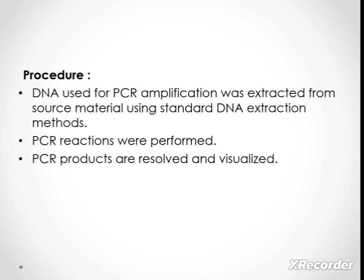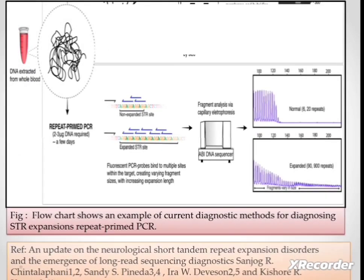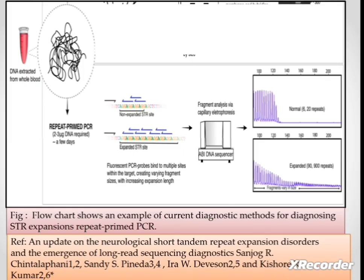Now, what is the procedure which was used? First, the DNA was extracted from the source material using standard DNA extraction methods. Then PCR was performed, and the PCR product was then resolved and visualized. This is the schematic representation of the whole experiment, from DNA extraction to how primers bind to DNA, then fragment analysis by capillary electrophoresis to the electropherogram, which is the graphical representation of the result showing different peaks in the normal and the expanded case.